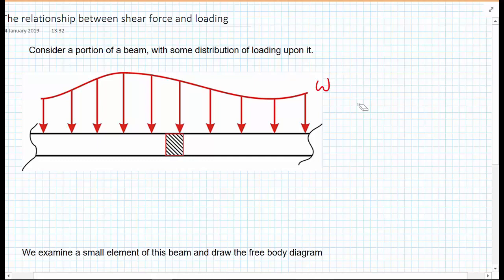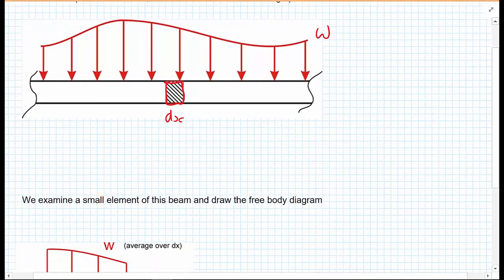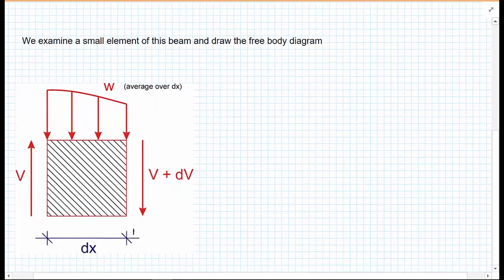And we're going to zoom in, in particular, on a very small portion of the beam. So very small, we're going to take it as a differential width of DX. We're going to zoom in on that little differential portion, which is DX wide.